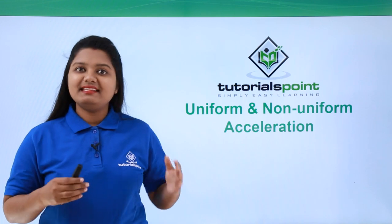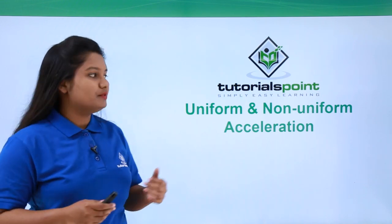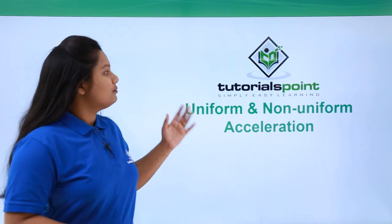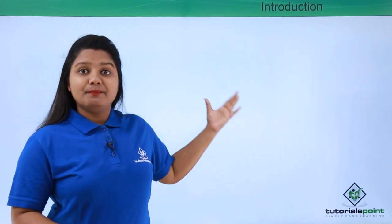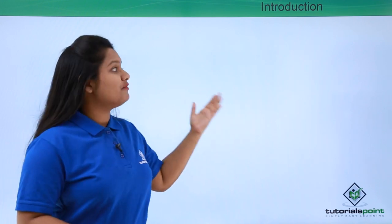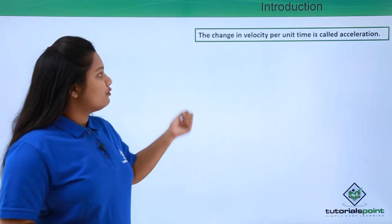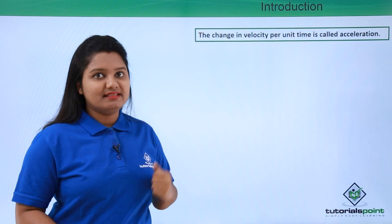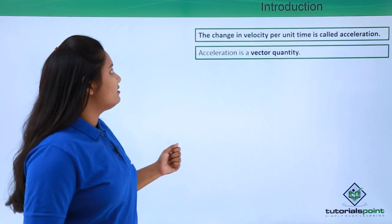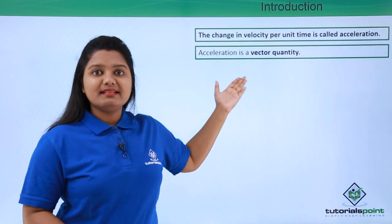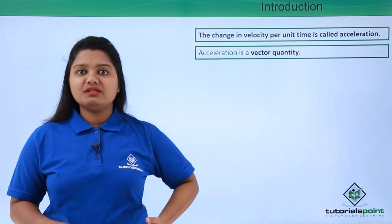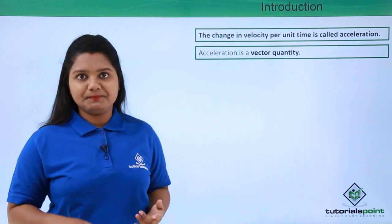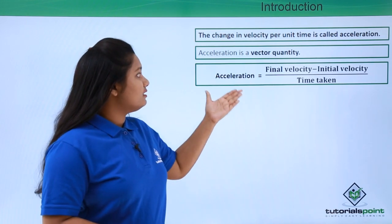Hello everyone. In this video we'll be discussing uniform and non-uniform acceleration. Before going to the topic, let us brush up our knowledge about acceleration. We have learned that the change in velocity per unit time is called acceleration, and acceleration is a vector quantity since it depends upon another vector quantity which is velocity. Thus acceleration has a magnitude as well as a direction.